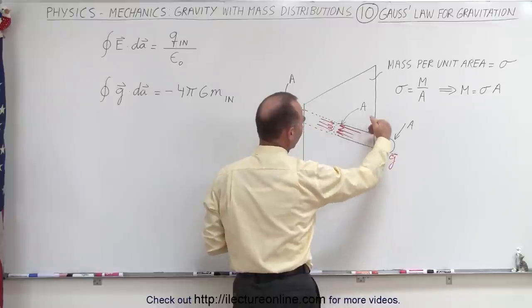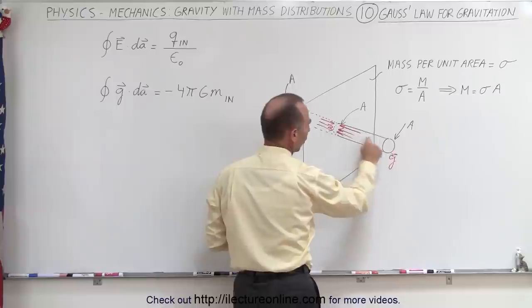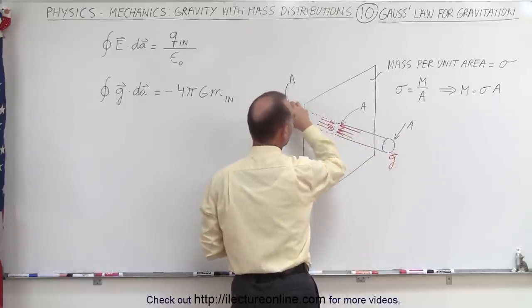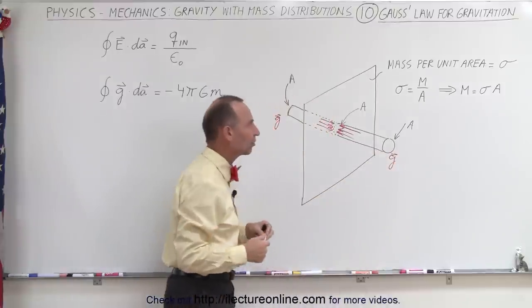Notice that there's no field lines going to the side of that Gaussian surface, only through the very edges. So we only need to worry about the surface area of the very edges of that cylindrical Gaussian shape.